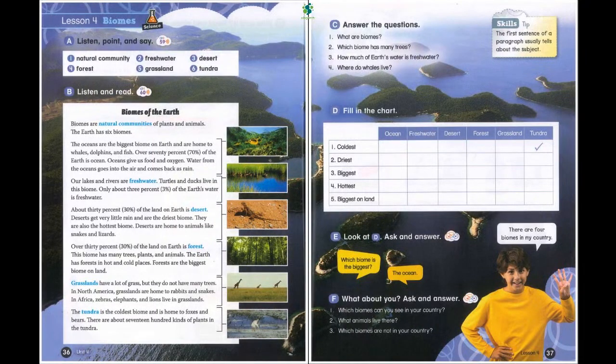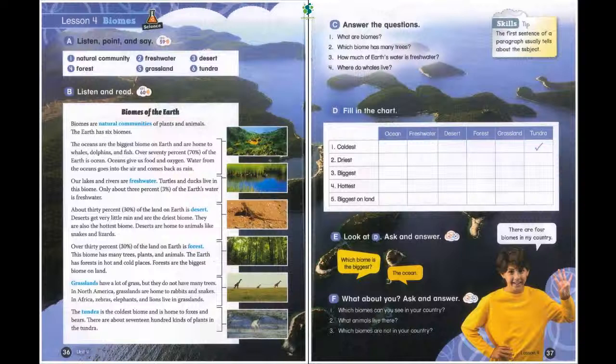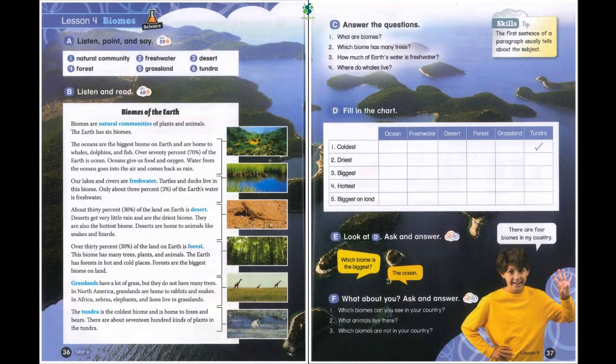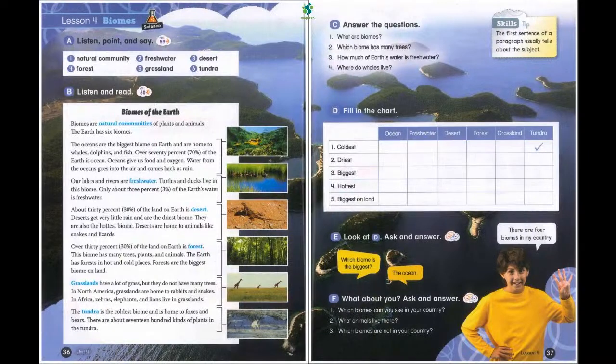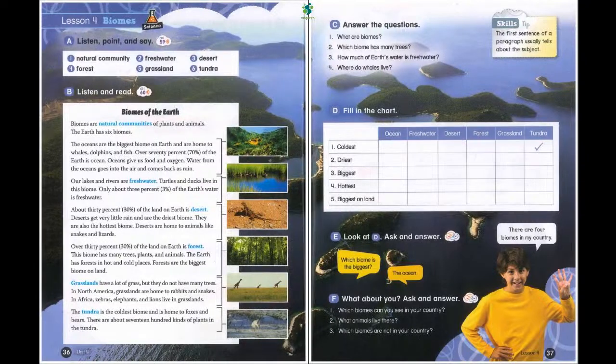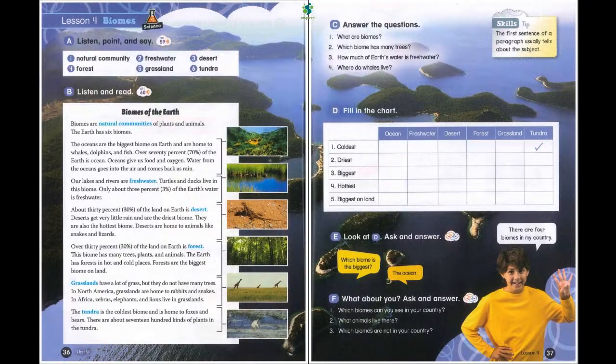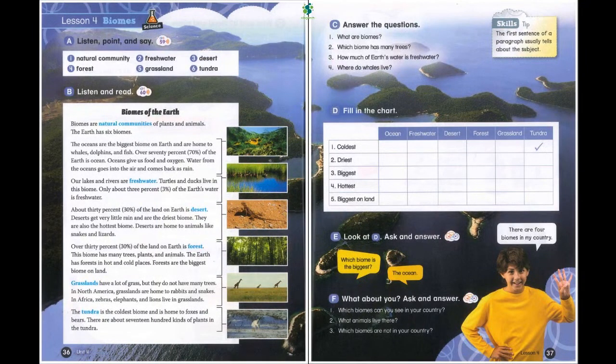Over 30% of the land on Earth is forest. This biome has many trees, plants, and animals. The Earth has forests in hot and cold places. Forests are the biggest biome on land. Grasslands have a lot of grass, but they do not have many trees. In North America, grasslands are home to rabbits and snakes. In Africa, zebras, elephants, and lions live in grasslands. The tundra is the coldest biome and is home to foxes and bears. There are about 1,700 kinds of plants in the tundra.